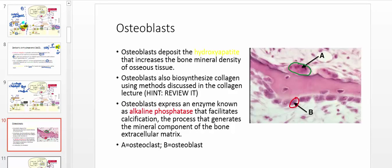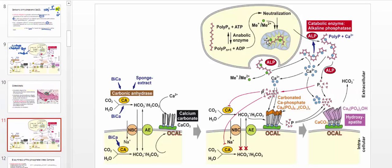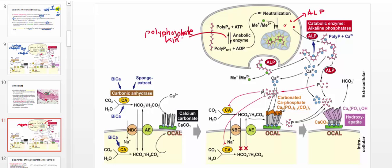One of the really important things about osteoblasts is they express a very important enzyme called alkaline phosphatase. The ribosomes of osteoblasts synthesize alkaline phosphatase, abbreviated ALP. They also synthesize another enzyme called polyphosphate kinase. The idea is that we're going to synthesize a very long chain of phosphates and then package that into a vesicle.